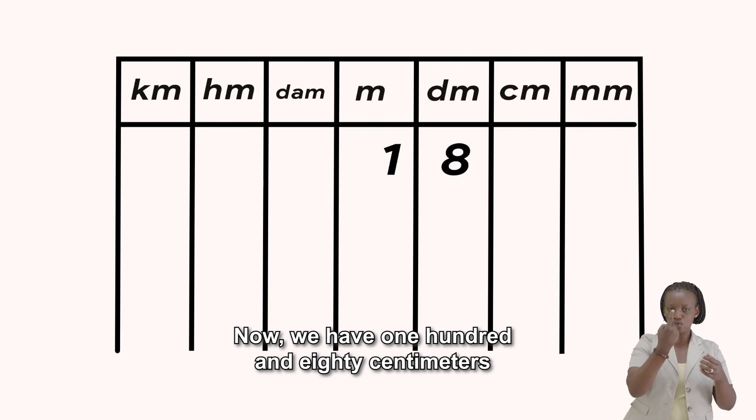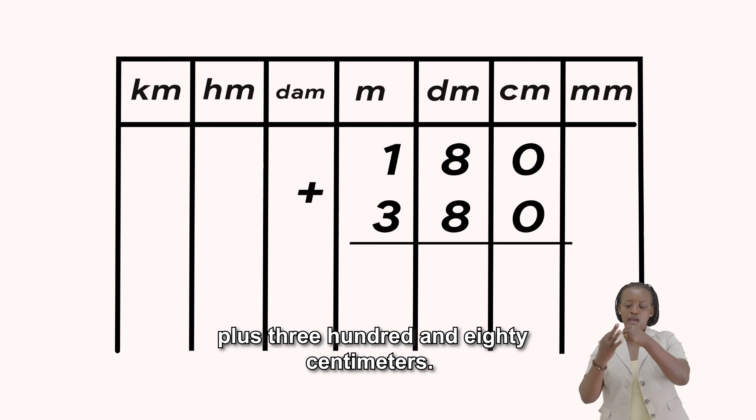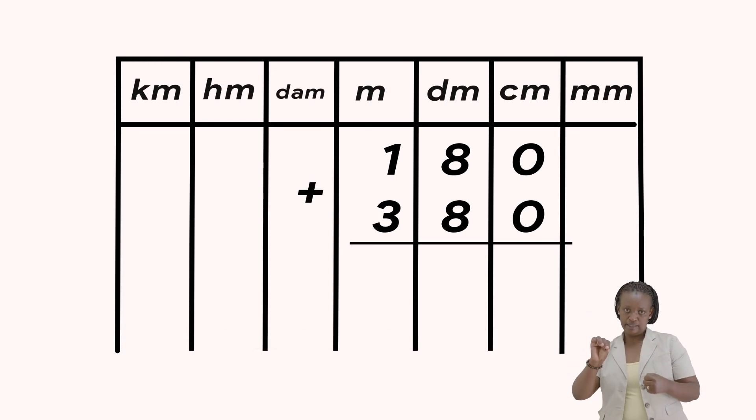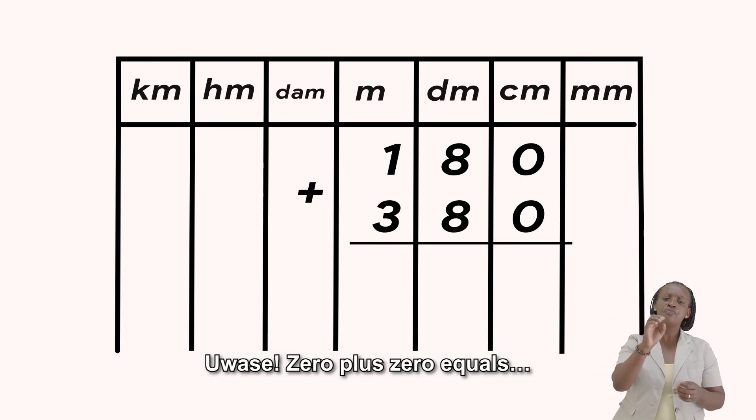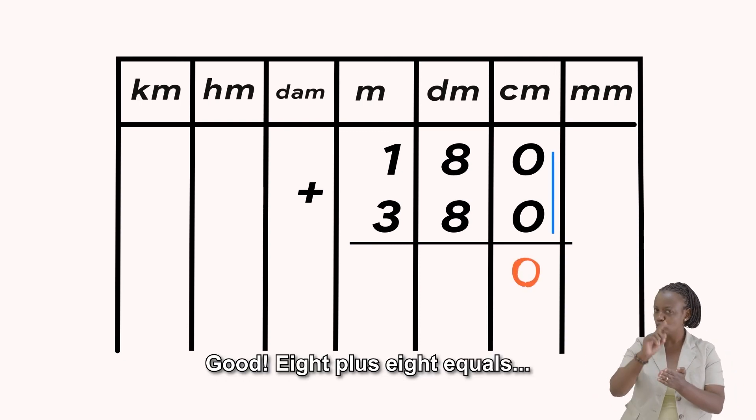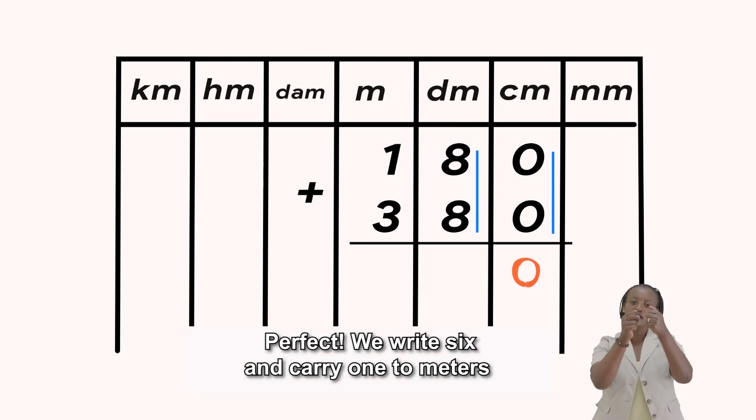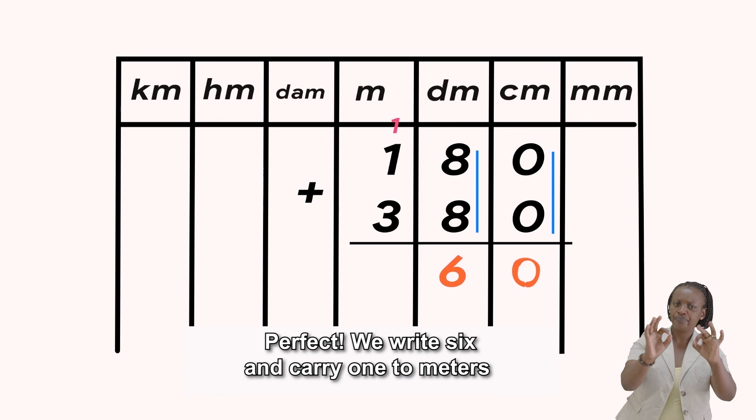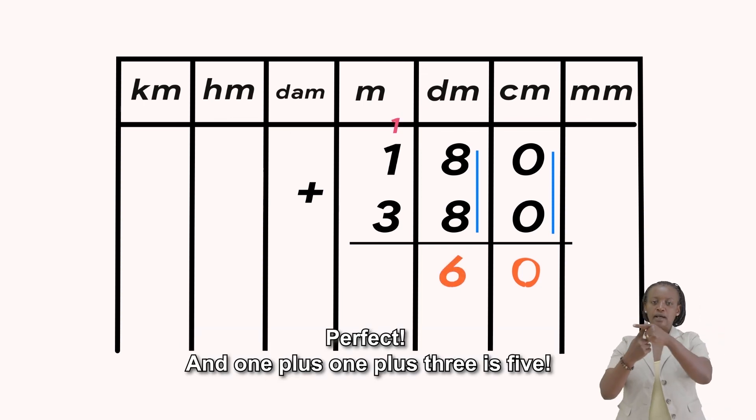Now, we have 180 centimeters plus 380 centimeters. What's it? 0 plus 0 equals 0. Good. Ganza, 8 plus 8 equals 16. Perfect. We'll write 6 and carry 1 to meters. And 1 plus 1 plus 3 is 5. So, we need 560 centimeters of wood.